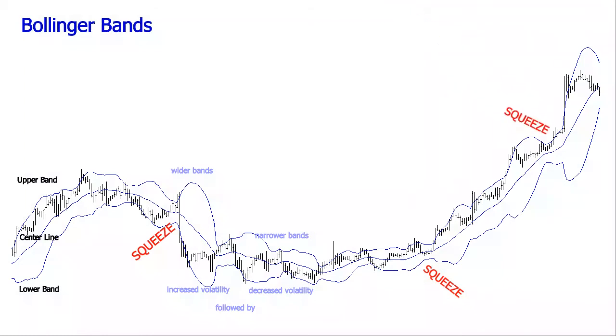Conversely, the wider the bands move, the more likely the chance of a decrease in volatility is. Breakouts above or below the bands are major events. Most of the time, price action occurs between the upper and the lower bands.